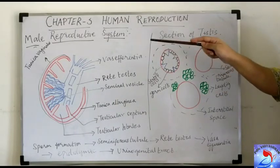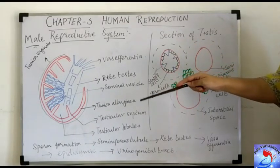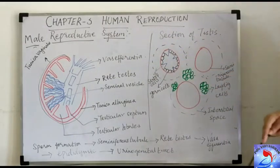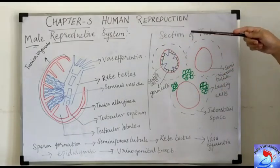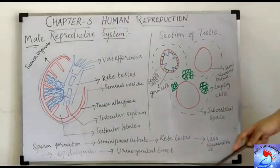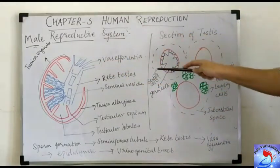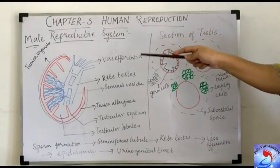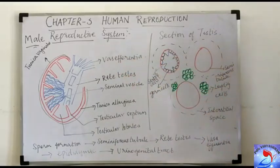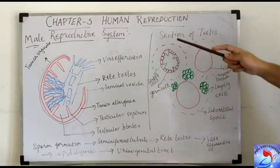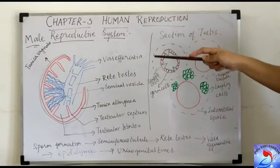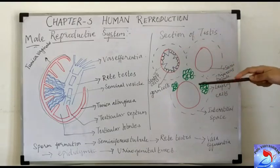The tunica albuginea convolves inwardly, forming septae and numerous compartments called lobules. There are a maximum of 250 to 300 lobules, and each lobule consists of a coiled structure which becomes linear towards the end. This coiled structure is called the seminiferous tubules. Each lobule contains about three seminiferous tubules, so in total there are about 900 seminiferous tubules.